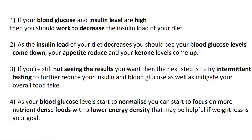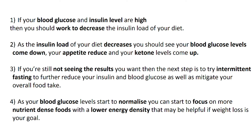To close: if your blood glucose and insulin levels are high, work to decrease the insulin load of your diet. As the insulin load decreases, you should see blood glucose levels come down, appetite reduce, and ketone levels rise. Remember, ketones are energy burned from body fat, which is more efficient than energy from food. If you're still not seeing results, try intermittent fasting to further reduce insulin and blood glucose and mitigate overall food intake. As your blood glucose normalizes, you can start focusing on more nutrient-dense foods with lower energy density, which is helpful if weight loss is your goal.